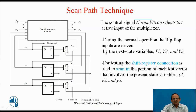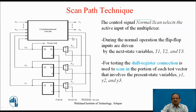Here, a sequential circuit is shown with three flip-flops. This is the combinational circuit with inputs W1 to Wn and outputs Z1 to Zm. External inputs are W1 to Wn, whereas the outputs are Z1 to Zk. These next state variables are given through the multiplexers, and these three multiplexers form a shift register.